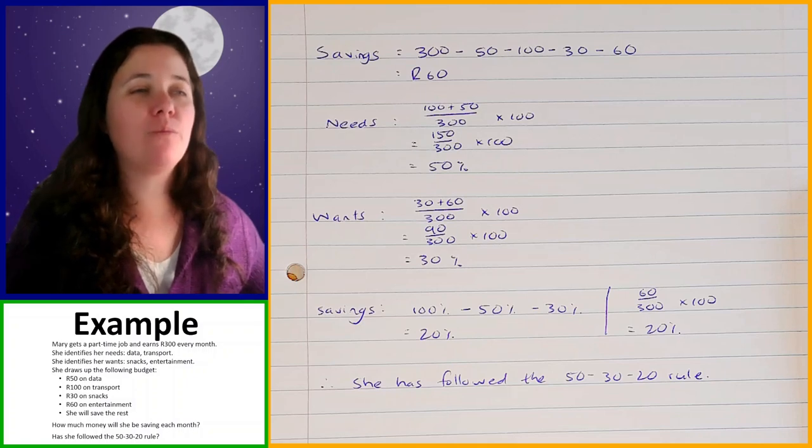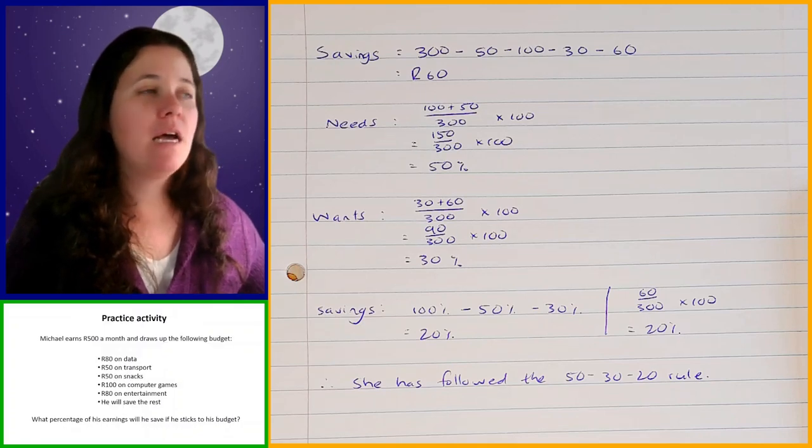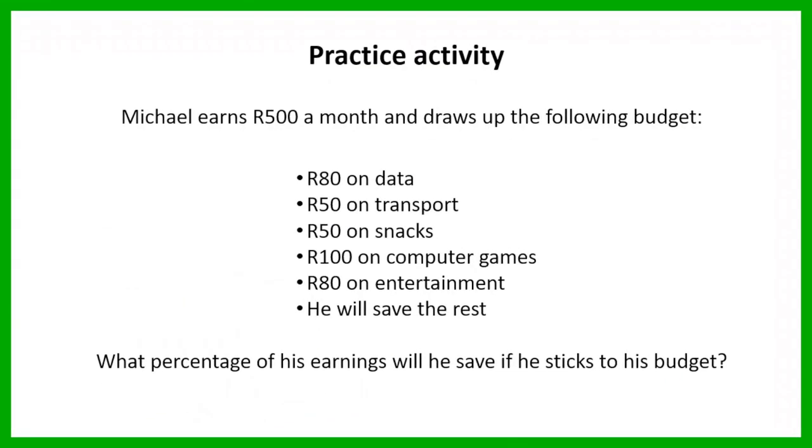Right, so now I'm going to give you an example that you're going to work on for yourself. In this example, Michael earns R500 a month and draws up the following budget. He plans to spend 80 rand on data, 50 rand on transport, 50 rand on snacks, 100 rand on computer games, 80 rand on entertainment, and then he will save the rest. What percentage of his earnings will he save if he sticks to his budget? Okay, so I am going to give you one minute to work on this.